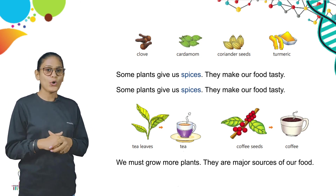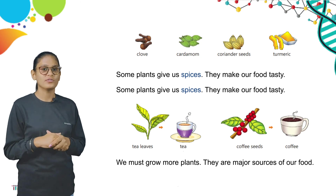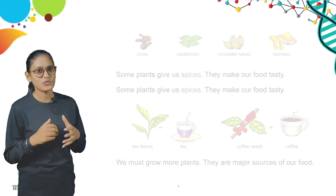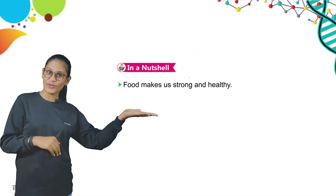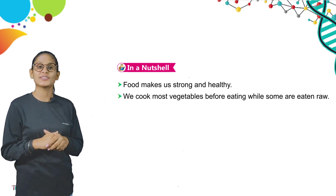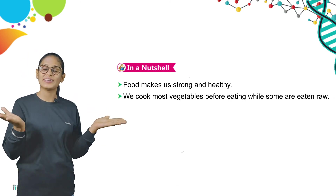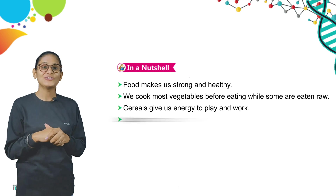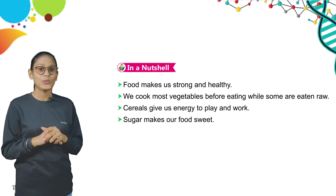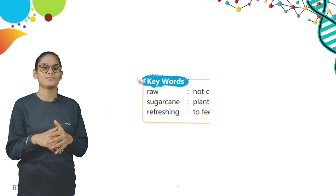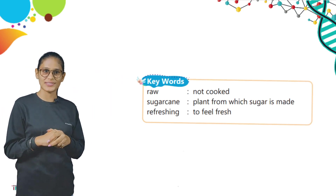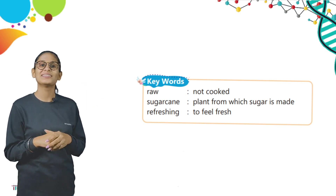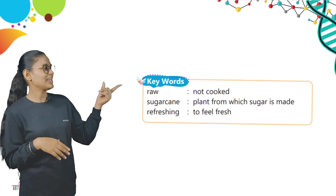We must grow more plants — they are major sources of our food. Now let's wrap up what we studied in this chapter. Food makes us strong and healthy. We cook most vegetables before eating, while some are eaten raw. Cereals give us energy to play and work. Sugar makes our food sweet. Key words: raw means not cooked; sugar cane is the plant from which sugar is made; refreshing means to feel fresh.